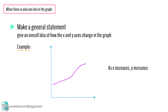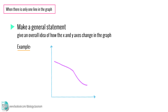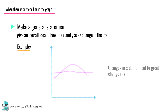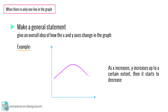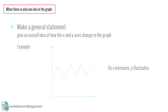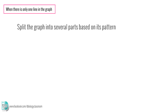For example: as x increases, y increases; as x increases, y decreases; changes in x do not lead to great change in y; as x increases, y increases up to a certain extent, then it starts to decrease; or as x increases, y fluctuates. After the general statement, split the graph into several parts based on its pattern.